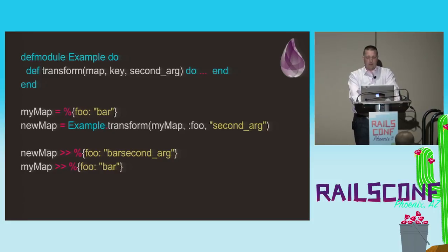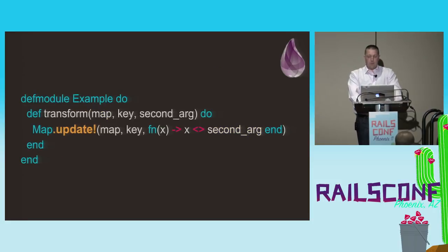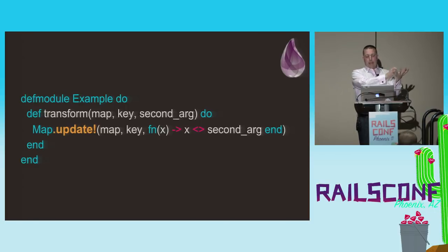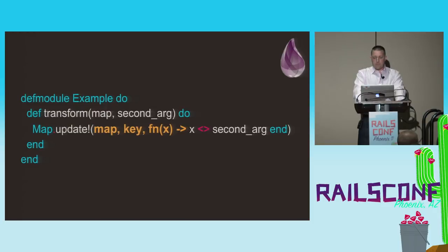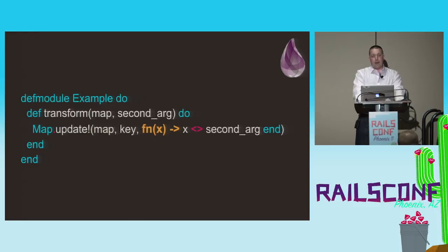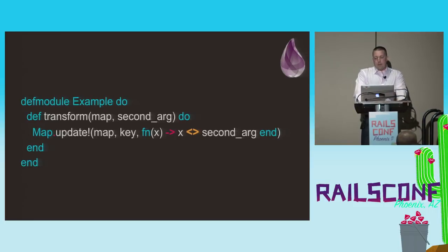Let's break down what's happening within our transform function. We call the update-bang method via the map module — we don't call a method on an object, because there are no objects. Instead I reference through the map module and use this update-bang method, which will raise an exception if the key isn't present in the map. The update function takes three arguments: a map, a key, and a function. The third argument is an anonymous function that takes the value at the map key as its argument, and the function code uses the angle-bracket string concatenation operator to combine the two values.